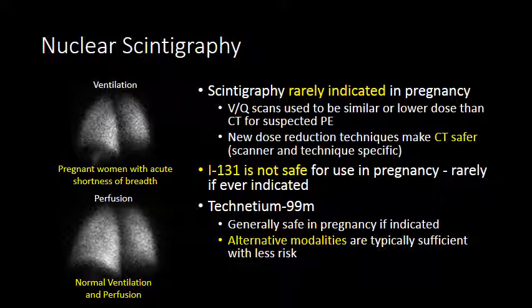Nuclear scintigraphy is another form of diagnostic imaging that uses ionizing radiation. Unlike fluoroscopy, CT, and radiographs — where ionizing radiation is generated externally and passed through the patient — with nuclear scintigraphy, you administer a radiopharmaceutical that goes into the body, localizes to a specific part of the body, and then emits ionizing radiation to form the image. Nuclear scintigraphy is rarely indicated in pregnancy. In the past, VQ scans and CT-PE protocols were of similar dose, but with new techniques, CT for suspected PE now has a much lower dose than a VQ scan and is felt to be safer in pregnancy.